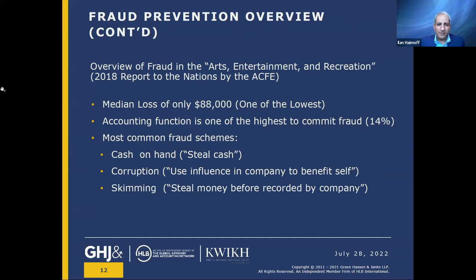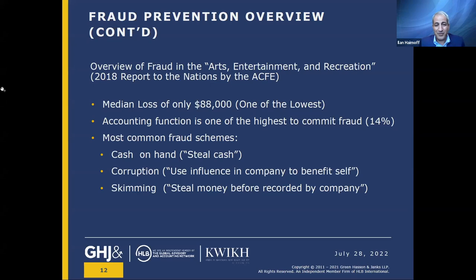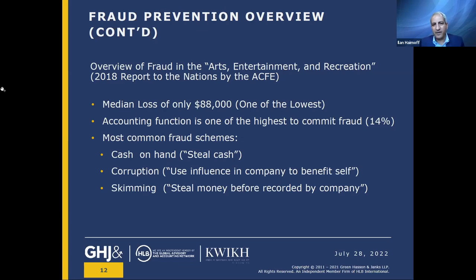When you think of who commits the most typical type of fraud within the entertainment space, the median loss according to the ACFE is approximately $90,000 per incident. Unfortunately, the accounting function is one of the highest — most likely to commit fraud in 14% of instances. The most common type of fraud is cash — stealing cash, corruption, or skimming — essentially stealing money before it's reported by the company.